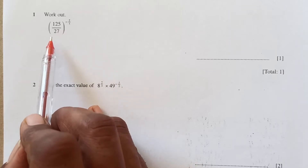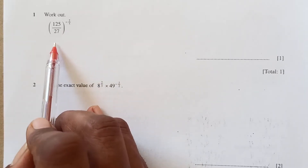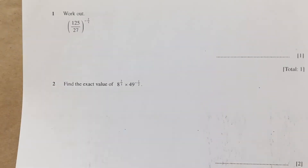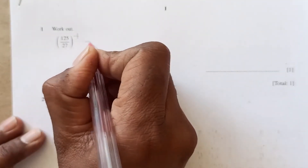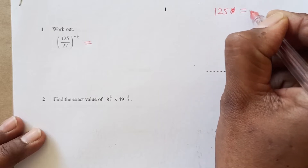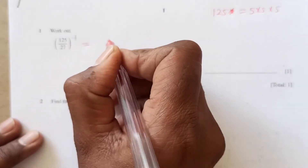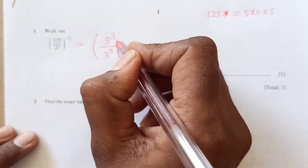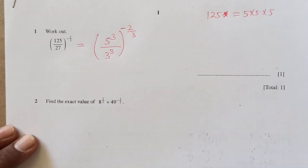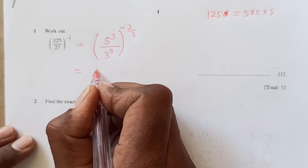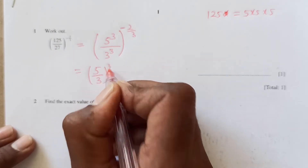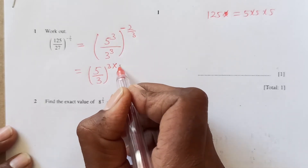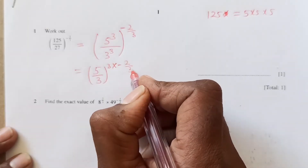The first question is: work out (125/27)^(2/3). So 125 can be written as 5 times 5 times 5, which is 5^3. The denominator 27 can be written as 3^3, and outside we have negative 2 over 3. Now you see both have power 3, so I can write this as (5^3 / 3^3) and the outside power is minus 2 over 3. The 3s cancel.